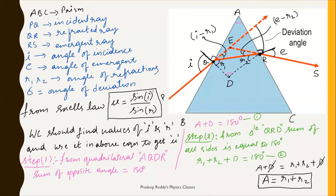To find the refractive index, we need to find i and r. We will do some mathematical modifications. First, let us choose quadrilateral AQDR. As we know, the sum of two opposite angles equals 180 degrees. For quadrilateral AQDR, the opposite angles are A and D, so A plus D equals 180 degrees. This is equation one.